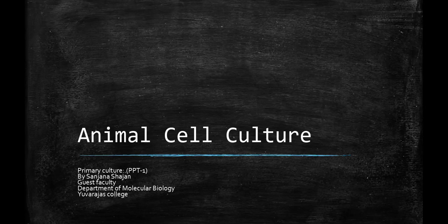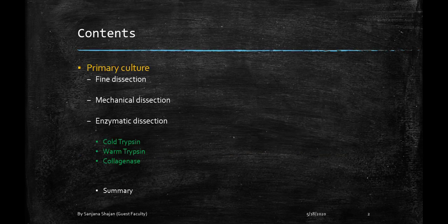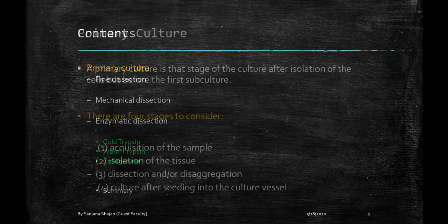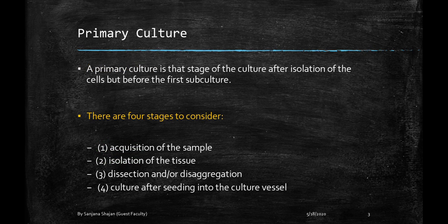Today we are going to study about the primary culture in animal cell culture. Primary culture includes three steps: fine dissection, mechanical dissection, and enzymatic dissection — which itself includes three types.